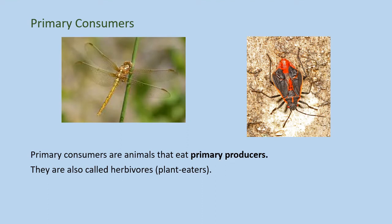Next, we have the primary consumers. Primary consumers are animals that eat primary producers. They are also called herbivores or plant eaters. Primary consumers eat primary producers, and the energy flows up the food web.